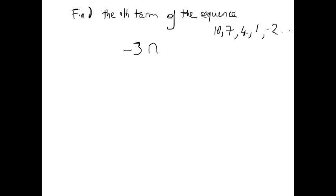Like we did before, we have to think: what would that give us for the first term? It would be minus 3 times 1, which is minus 3. So if this were the rule, the first term would be minus 3. But of course, the first term here is 10, so it's quite a bit different. What do you have to do to minus 3 to get to 10? You'd have to add 13. So we add 13 to minus 3n, and that gives us our nth term. So tn equals minus 3n plus 13.